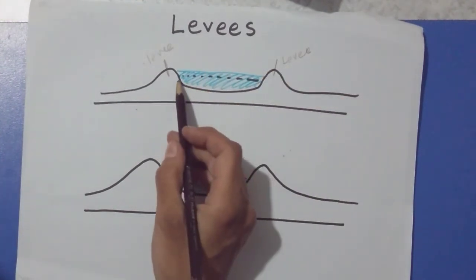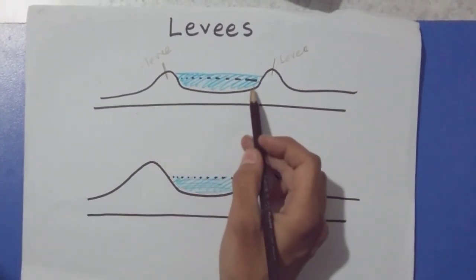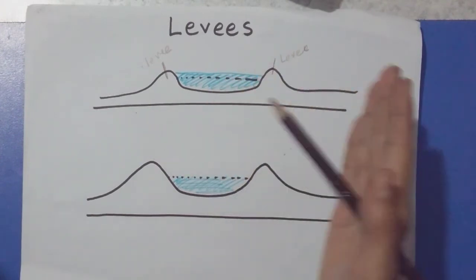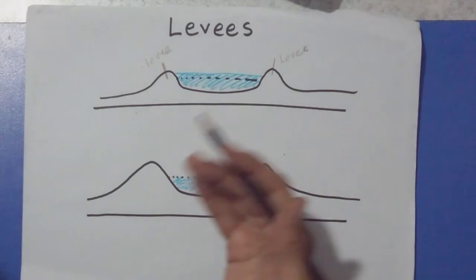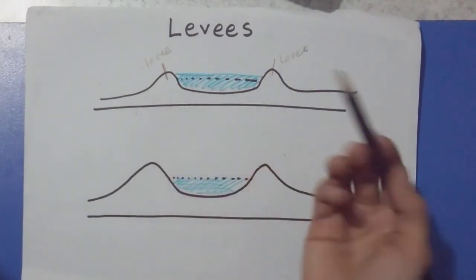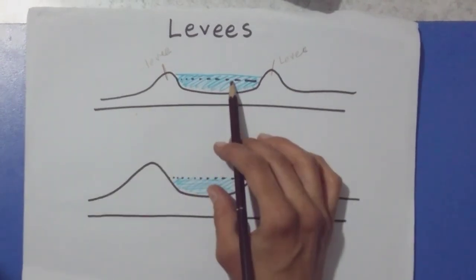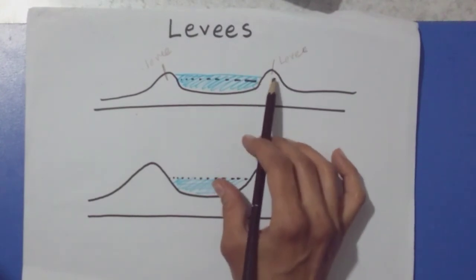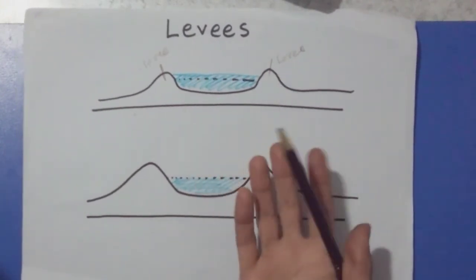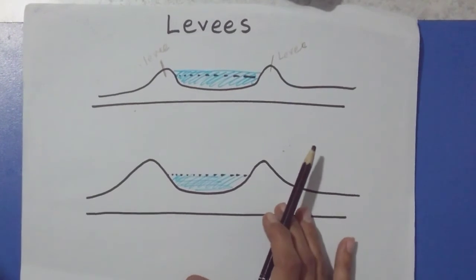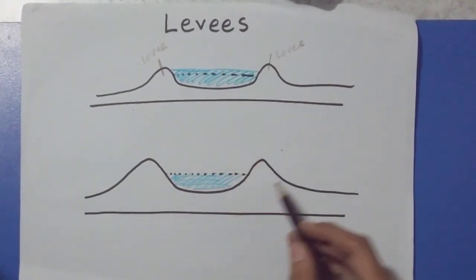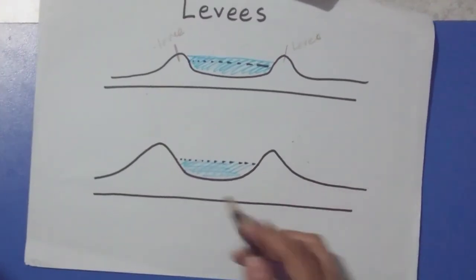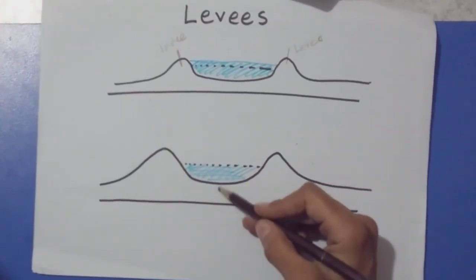Now how is a levee formed? Naturally, when the river flows through a channel, it's eroding and flowing through. The land on either sides, on the left and right, starts to rise. That part becomes a levee. So it's naturally formed, and it's man-made also. Sometimes this area of the river is artificially raised in order to prevent floods.